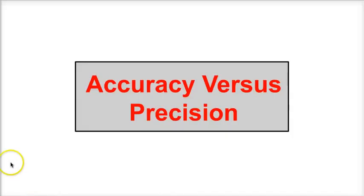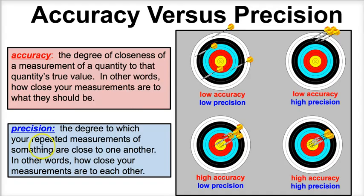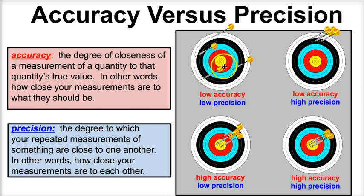Hey guys, this is Mr. Millings and today we're going to learn about accuracy versus precision. Let's suppose we have a target and we're going to play some darts. The object when we play darts is to hit the bullseye every single time.